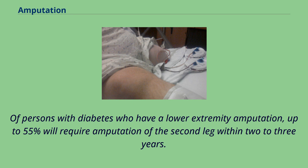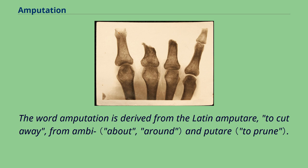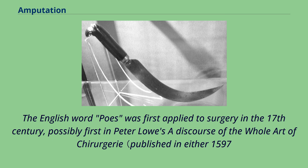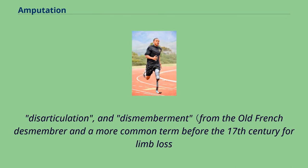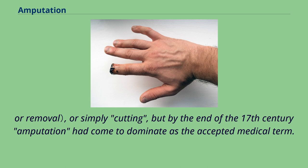The word amputation is derived from the Latin amputare, meaning 'to cut away,' from ambi- and putare. The English word was first applied to surgery in the 17th century, possibly first in Peter Lowe's A Discourse of the Whole Art of Surgery, published in either 1597 or 1612. His work was derived from 16th century French texts, and early English writers also used the words extirpation, disarticulation, and dismemberment — from the Old French desmembrer — a more common term before the 17th century for limb loss or removal, or simply cutting. By the end of the 17th century, amputation had come to dominate as the accepted medical term.